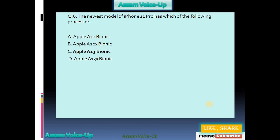Sixth question: The newest model of iPhone 11 Pro uses which of the following processors? Options available: Apple A12 Bionic, Apple A12X Bionic, Apple A13 Bionic, Apple A13X Bionic. The correct one is option C — Apple A13 Bionic.